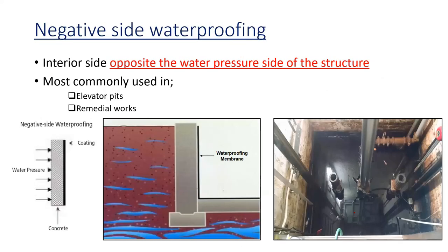The negative side is the interior side, opposite the water pressure side of the structure. If the water pressure is coming from one direction, the negative side is the opposite face. We normally practice this in lift wells. However, the best practice is to apply waterproofing on both the positive and negative sides. If only the negative side is treated and there is poor workmanship or leakage, rectification can only be done on the same side, which is very hard. That is why for substructures we use both positive and negative side waterproofing.